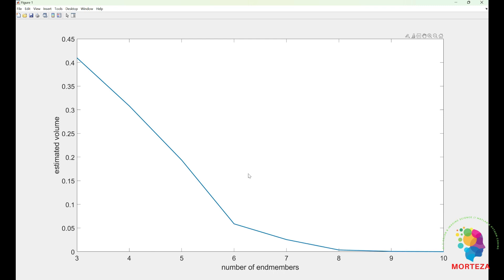And this is the plot of the volume. As you can see, it's going to go to zero at nine, which means we have nine independent endmembers. And if you want to choose ten, that means this tenth one is a linear combination of these nine. So we have nine independent endmembers.